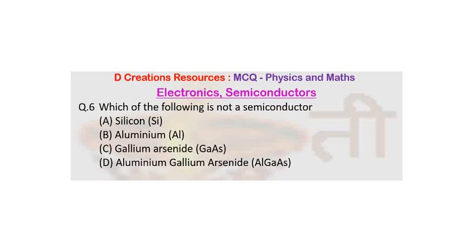This question is on the subtopic Electronics and Semiconductors. The question is: which of the following is not a semiconductor? The options are A. Silicon (Si), B. Aluminium (Al), C. Gallium Arsenide (GaAs), and D. Aluminium Gallium Arsenide (AlGaAs).